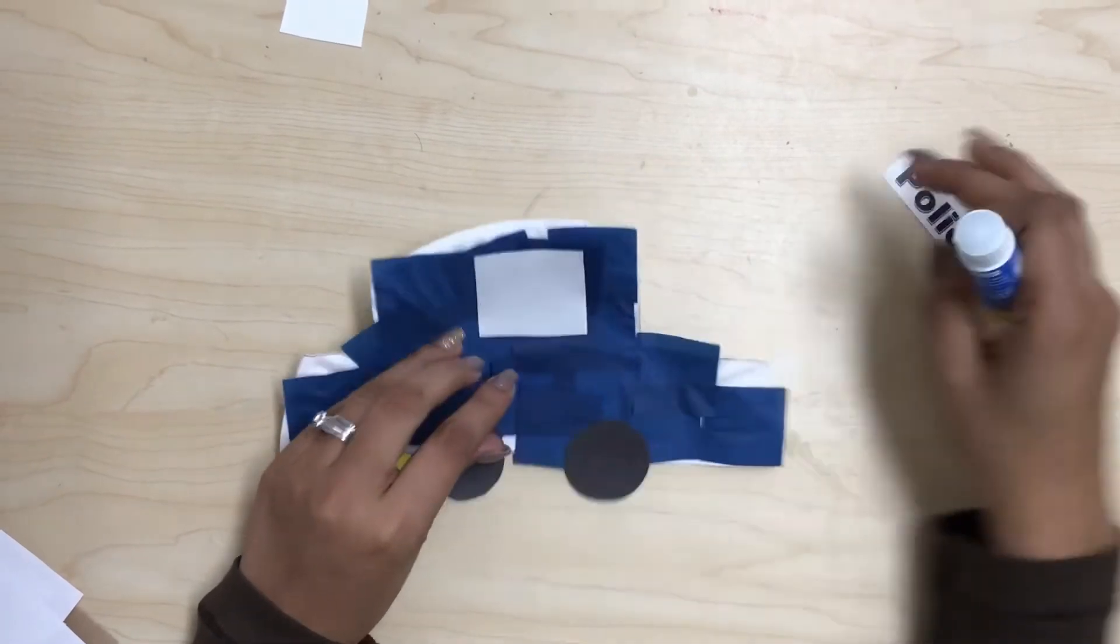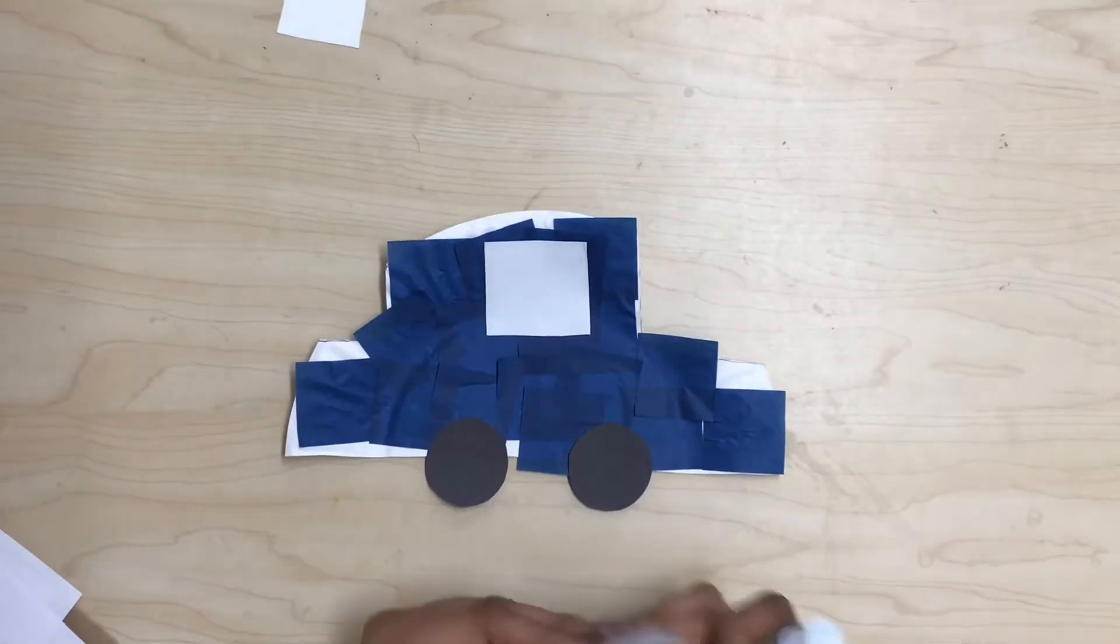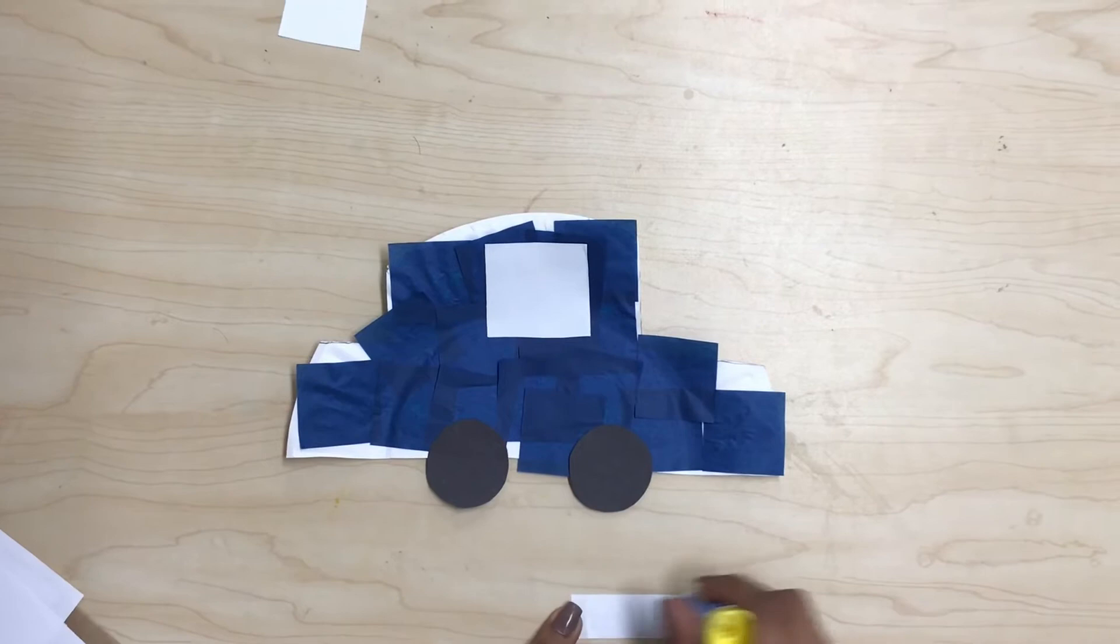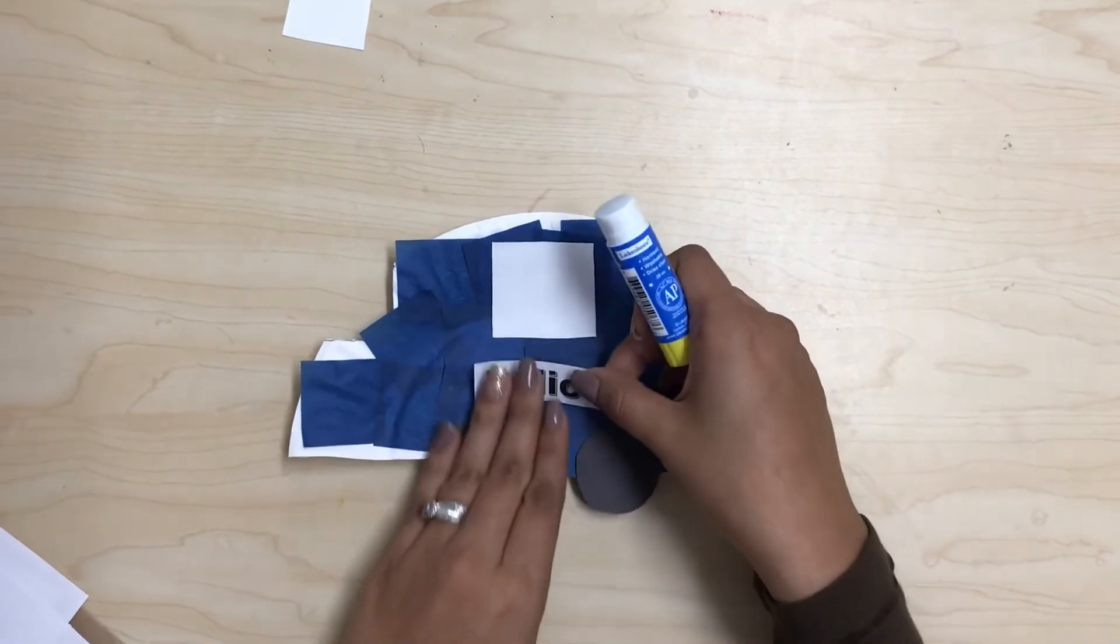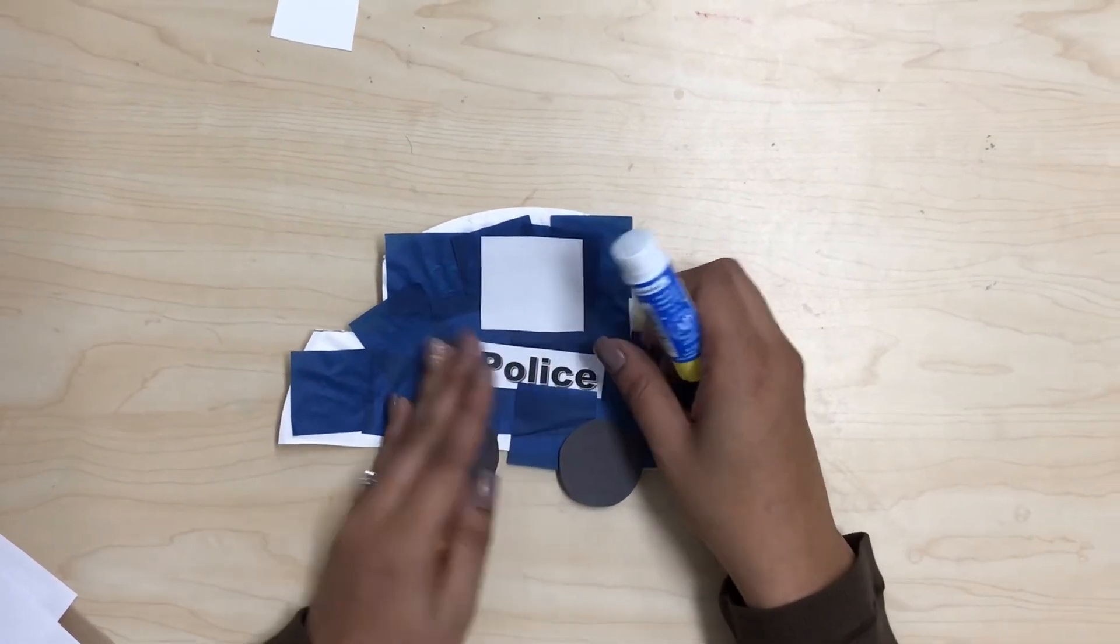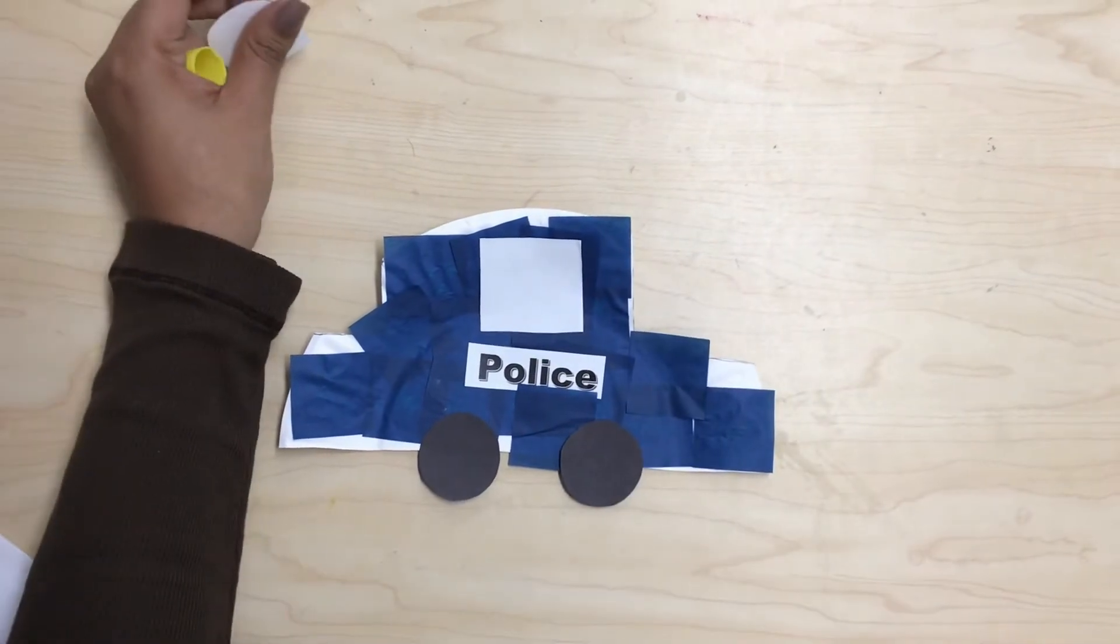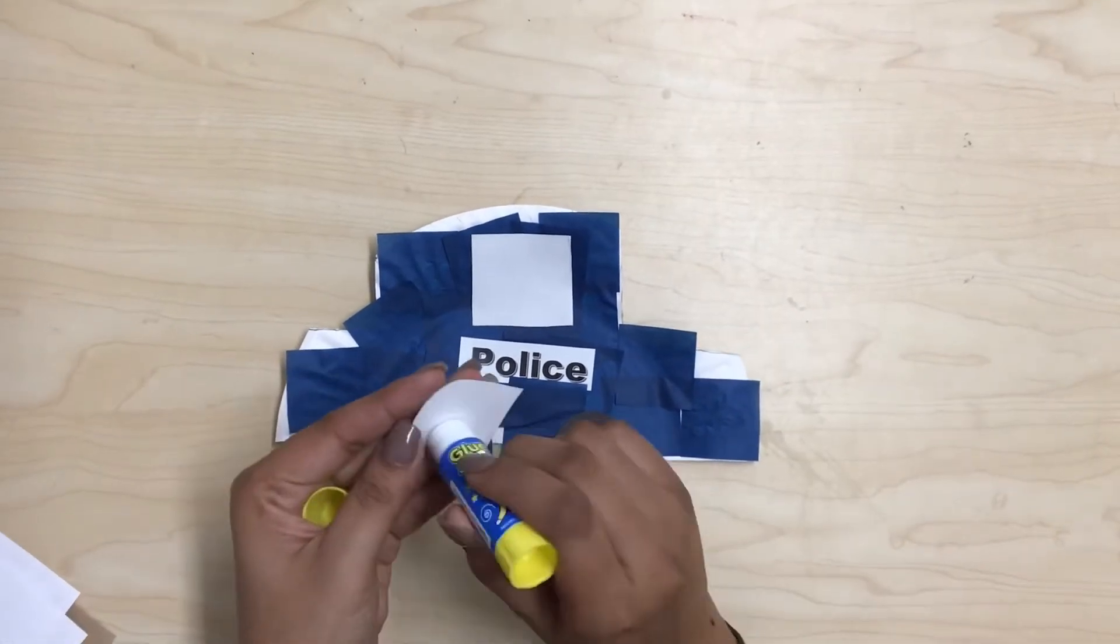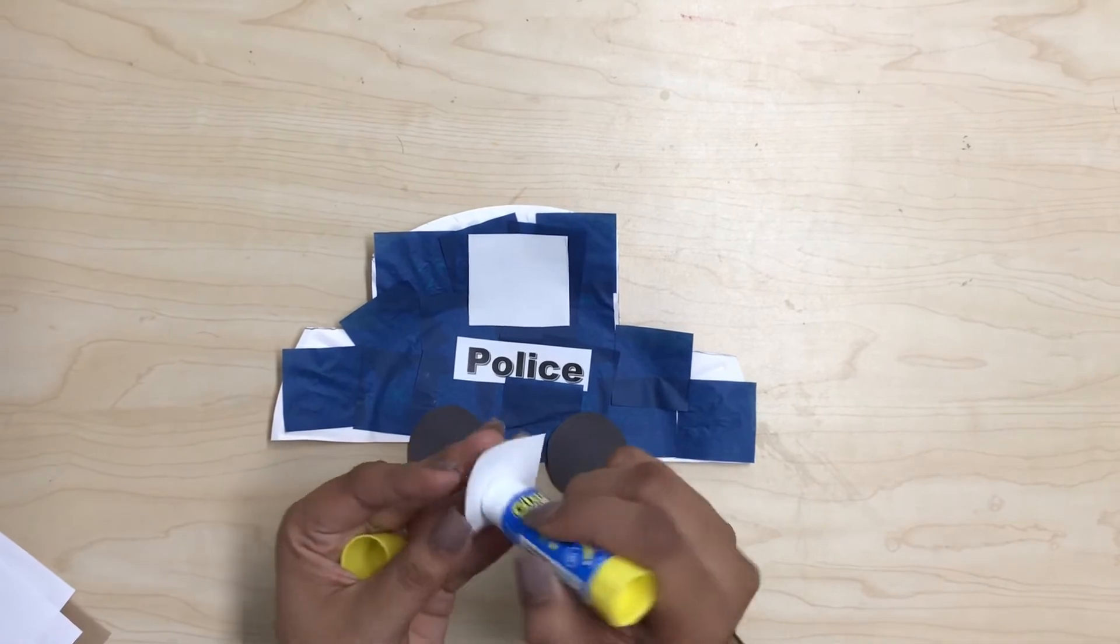Then I'm gonna get the police sign and I'm gonna glue it in the center of the police car. And to finish, I'm gonna get the light bar and I'm gonna glue it on the top part of my police car.